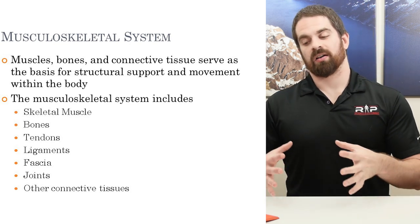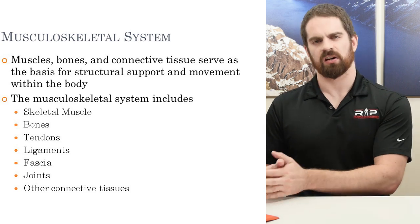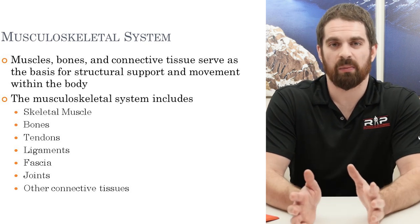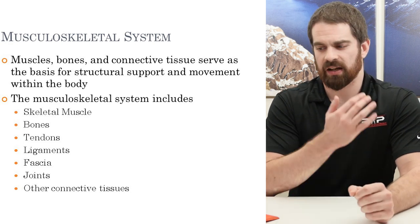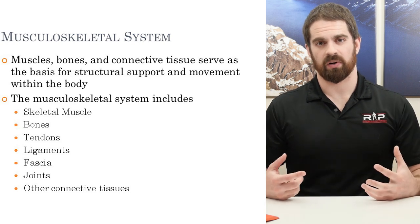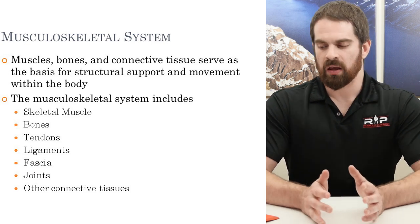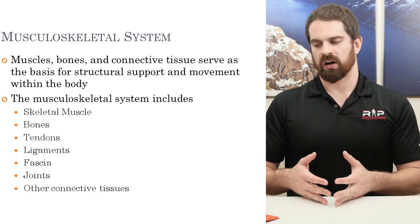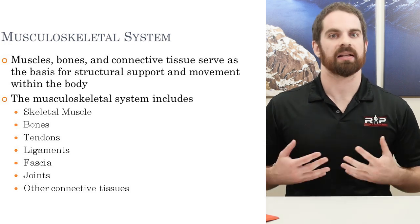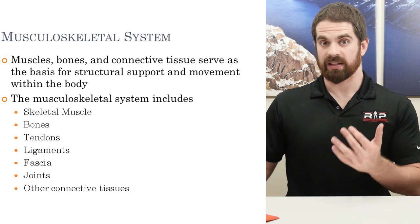Now we get into the musculoskeletal system. The skeletal muscle system is the primary means for structural support and the basis for all human movement. When talking about the musculoskeletal system, we include all skeletal muscle, bones, tendons, ligaments, fascia, all the joints — elbow, shoulder, knee, sternum — and any other connective tissues relating to movement. There are 206 bones and generally over 600 muscles in the body. Muscles act by pulling or shortening — they only forcibly shorten; they can lengthen against resistance but don't expand. They pull on tendons and bones to generate human movement.